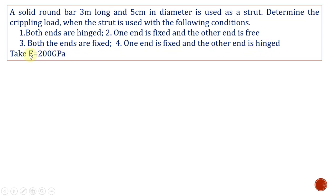The Young's modulus of the material is 200 GPa. A column, which is otherwise called a strut, is subjected to these conditions. Under all four conditions, we are going to calculate the crippling load applied on the column.